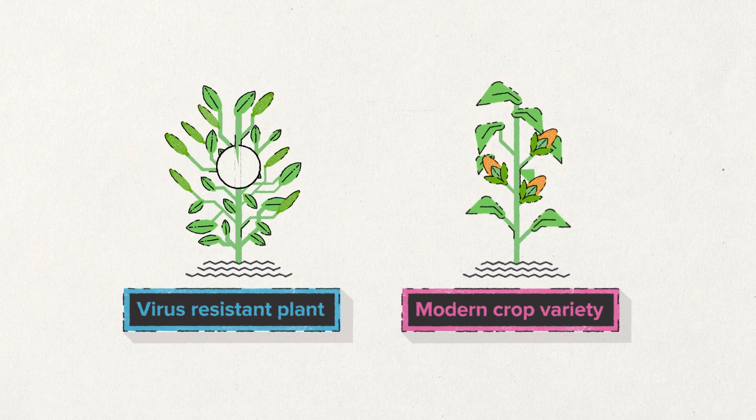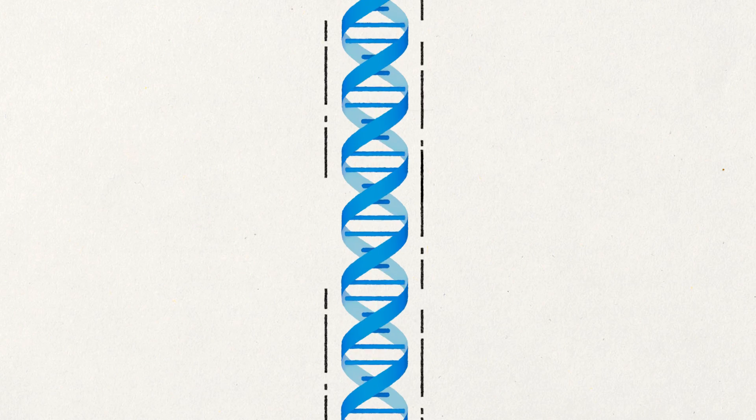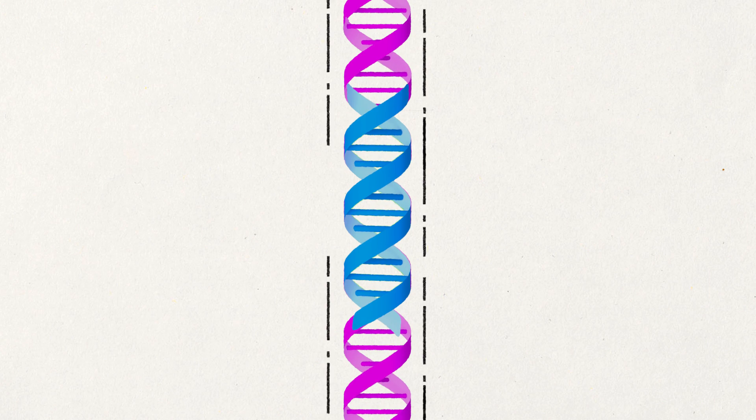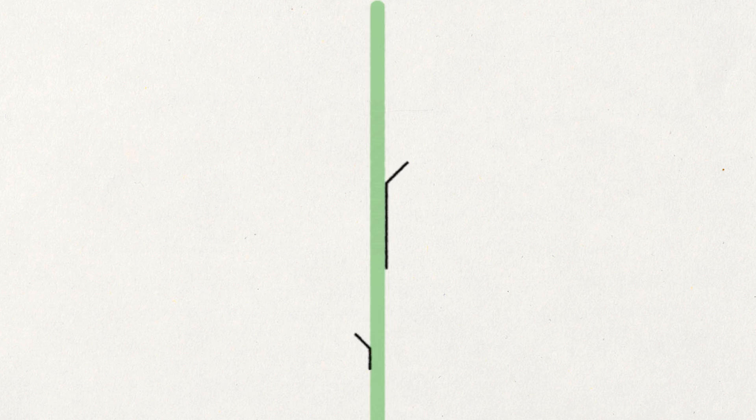In other cases, GM, where scientists take a gene and insert it directly into a crop, might be easier, or indeed the only way they can be deployed.